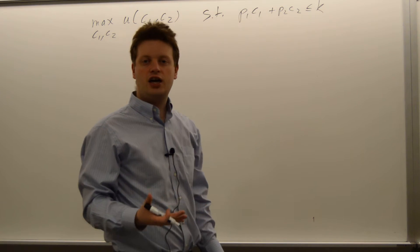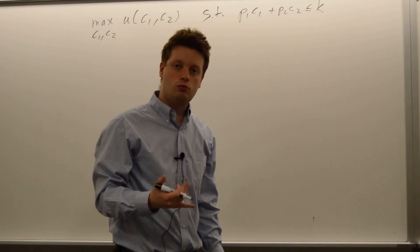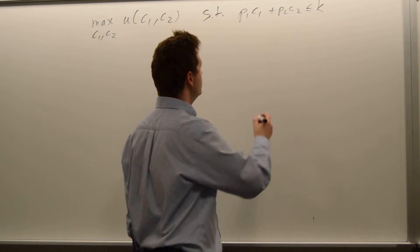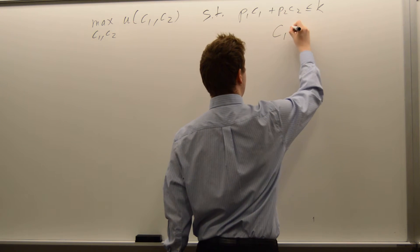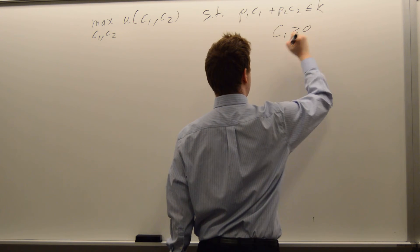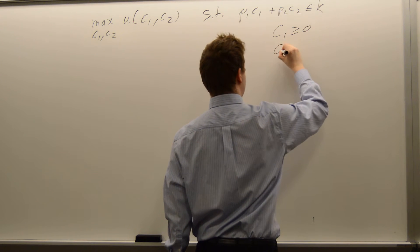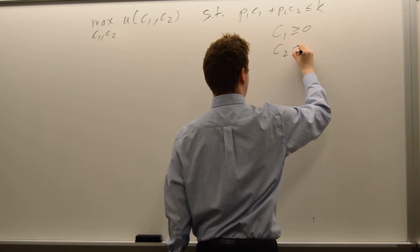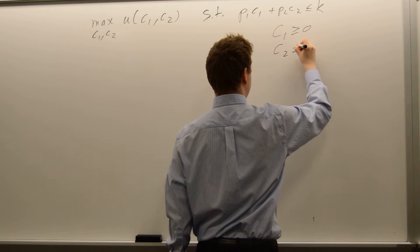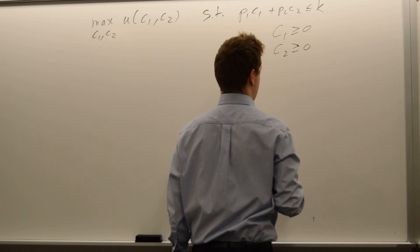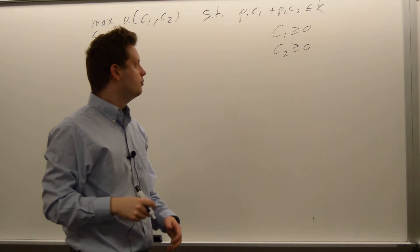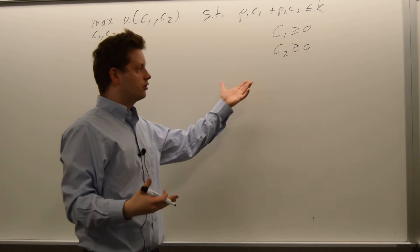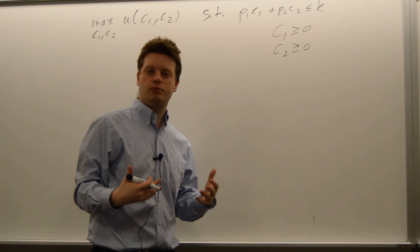In addition, we have two more constraints: c1 is greater than or equal to 0 and c2 is greater than or equal to 0, because we cannot consume any negative amounts of goods.